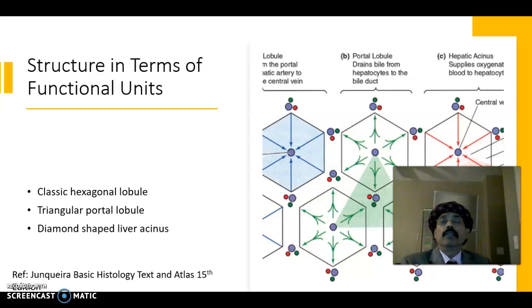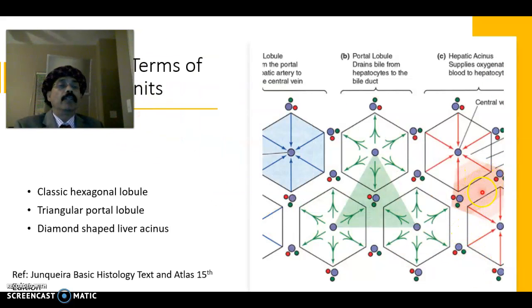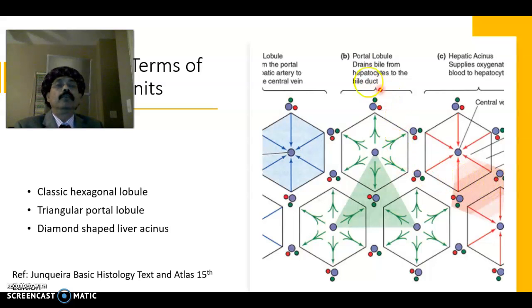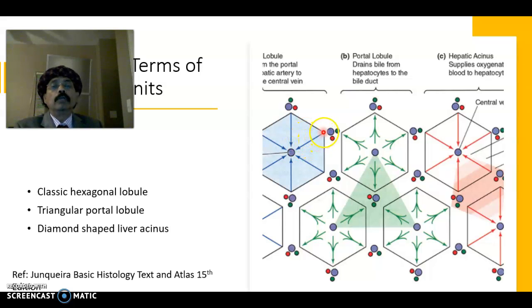This diamond-shaped space is the hepatic acinus, which supplies oxygenated blood by means of a branch of the hepatic artery. The portal lobule drains bile from hepatocyte to the bile duct, while the hepatic lobule collects blood from the portal vein and hepatic artery. Blood goes through the hepatic sinusoid to the central vein, from the central vein to the hepatic vein, and eventually to the inferior vena cava.